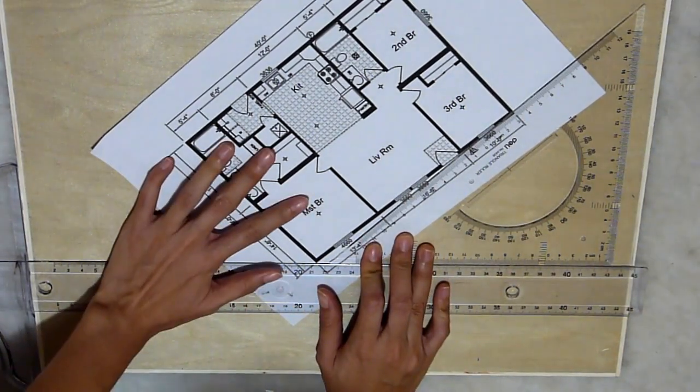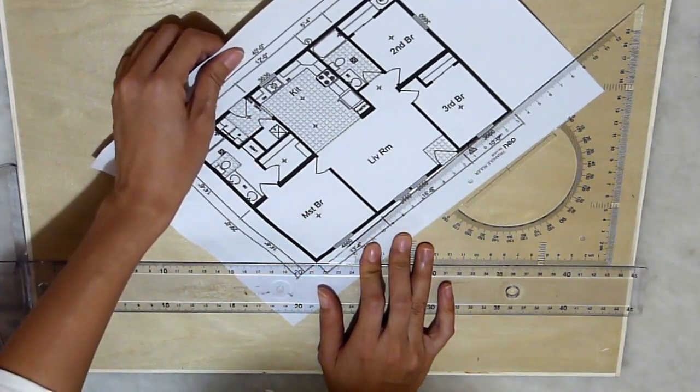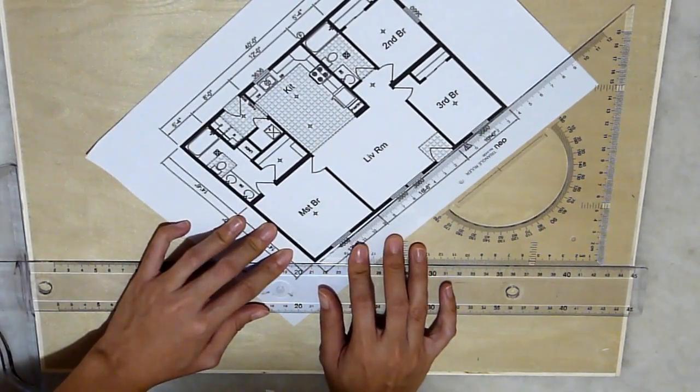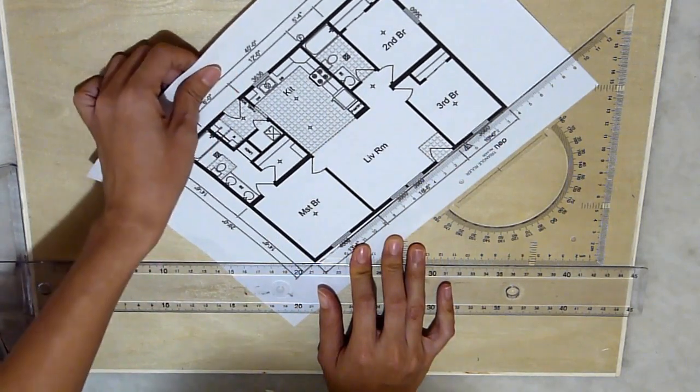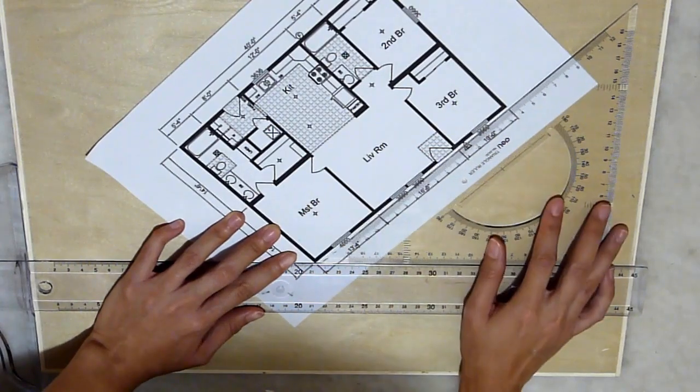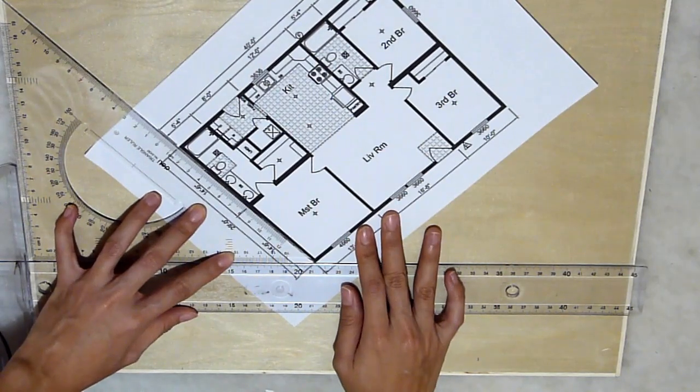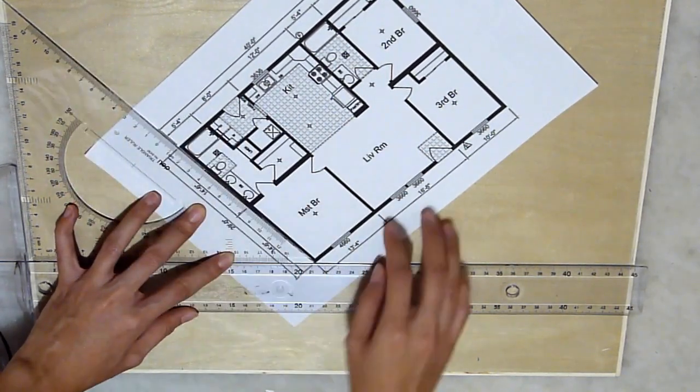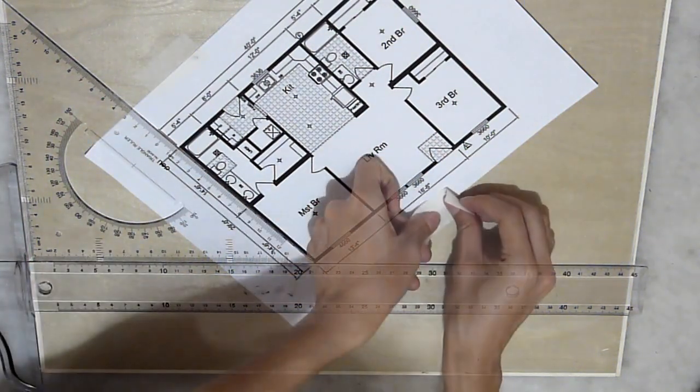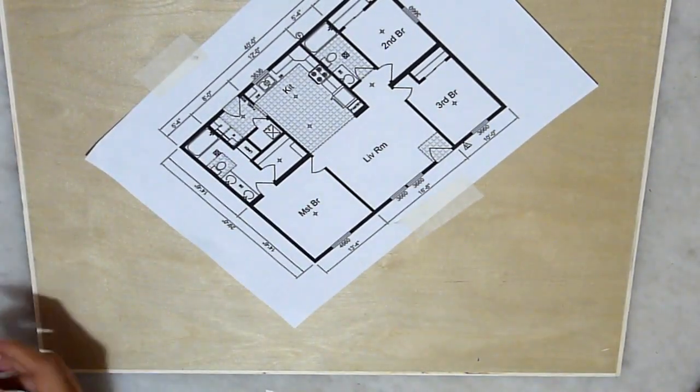Now you just have to make slight adjustment to make sure that it aligns with this ruler here. And once you do so, you find that the wall should align with the ruler. And you want to secure this plan in place. Okay, now there you have your plan ready. You can start your axonometric set up.